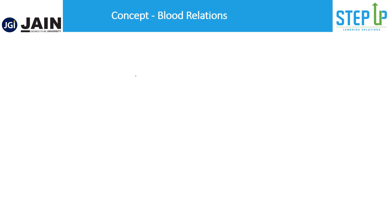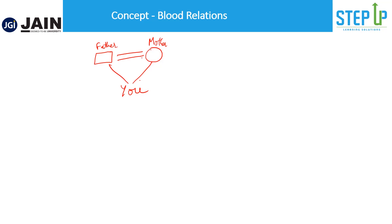Let's take a simple example. For males we use a square symbol, and for females a circle. When two people are married we connect them with an equals sign. Siblings are connected with a horizontal line. So your mother's brother, which is your uncle, would be shown as a sibling branch off your mother. Your father's sister or father's brother can similarly be represented this way.